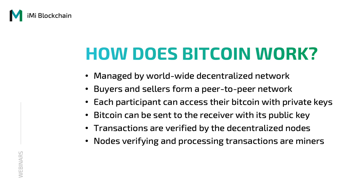Now let's get a hold of how Bitcoin works. It is managed by a worldwide decentralized network. The traders of Bitcoin buy and sell to form a peer-to-peer network. There are two keys that can be attributed to a participant: a public key and a private key. Each participant in the network can access their Bitcoin with private keys, and Bitcoin can be sent to the receiver with its public key. These transactions are then verified and processed by miners — decentralized nodes that verify and process transactions.